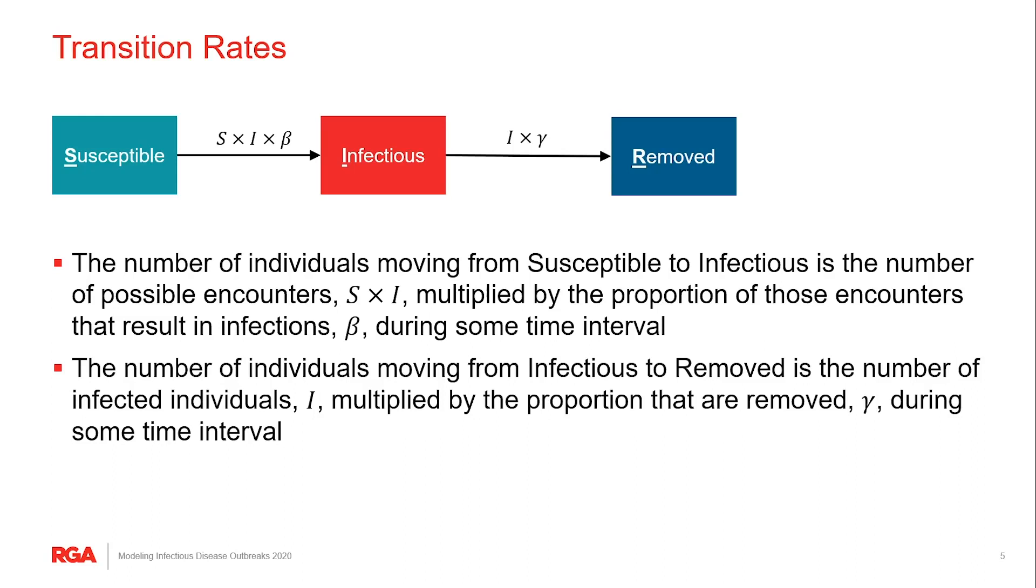So that proportion we'll call beta. Then the transition rate out of the infectious box is just the number of infectious individuals, I, multiplied by a proportion that recover during that time interval which we represent as gamma.